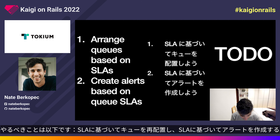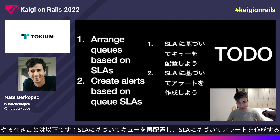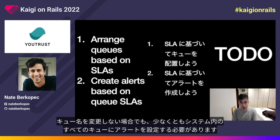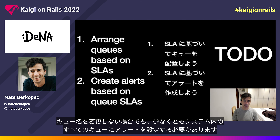Here are your to-do items: rearrange your queues based on SLAs, create alerts based on those SLAs. Even if you don't change your queue names, you should at least have a queue time alert on every single queue in your system.